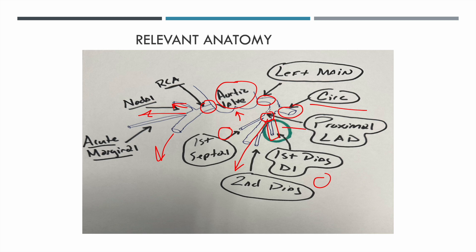That produces the classic South African flag sign findings. Just think of this Y on its side: elevation in 1, elevation in AVL, elevation in V2, and maximal depression in lead 3. I hope you found this case study and presentation helpful, and I will see you all in the next video.